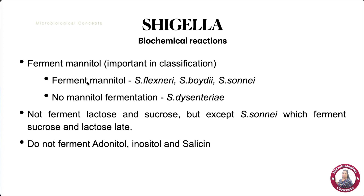Shigella species can be classified based on mannitol fermentation. Mannitol-fermenting species include Shigella flexneri, Shigella boydii, and Shigella sonnei, while Shigella dysenteriae does not ferment mannitol. Shigella species do not ferment lactose or sucrose, except Shigella sonnei which ferments sucrose and lactose in the later period. They also do not ferment adonitol, inositol, or salicin.